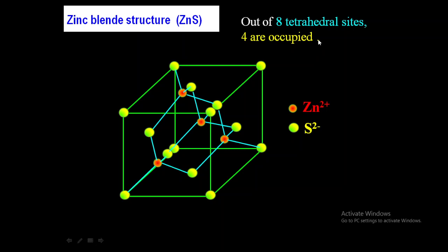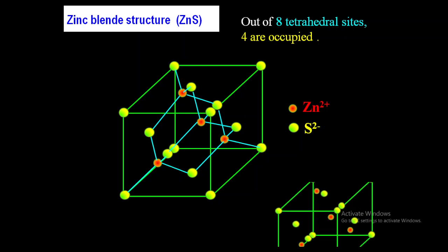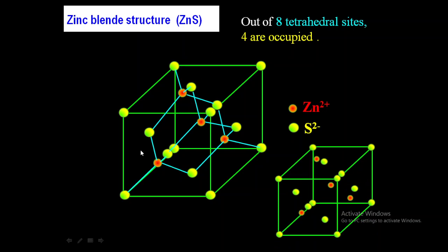To show how these sites look, I am constructing one more unit cell — the same zinc blende structure. If I draw one plane here and one plane here, I can see there are a total of 8 boxes: 4 upper boxes and 4 lower boxes.